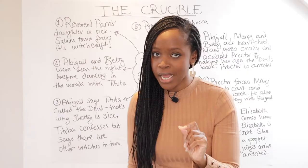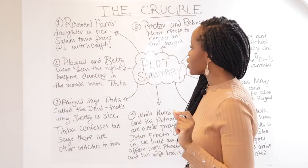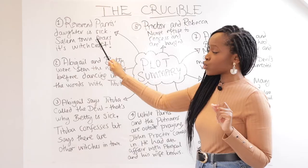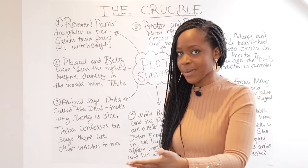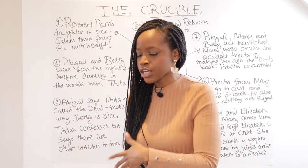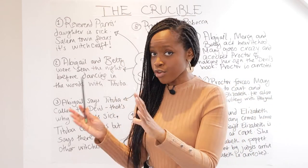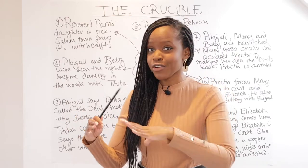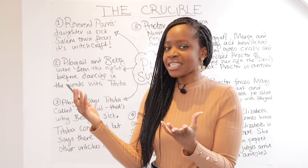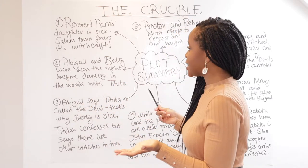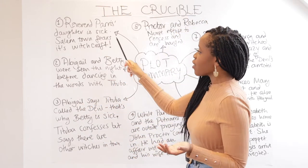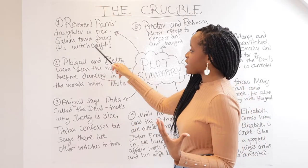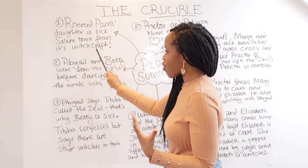The play starts with us meeting Reverend Parris. We learn that his daughter Betty is sick — he's by her bedside in her sparse, puritanical room with very few decorations. We learn that there is a rumour in Salem, the town they live in, that witchcraft has caused her to be sick.